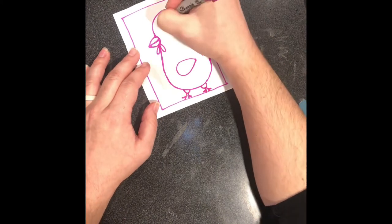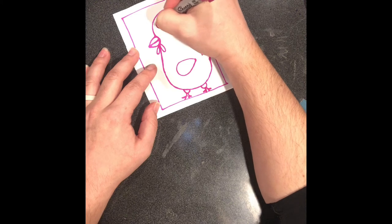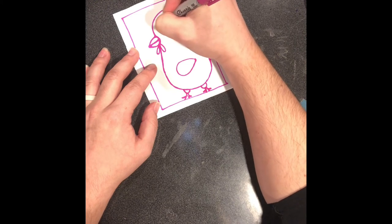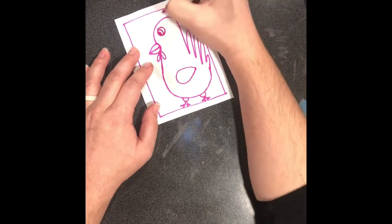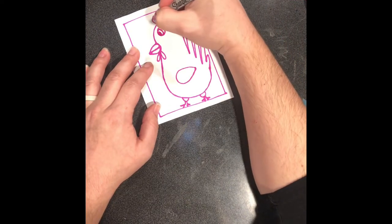Then I'm going to come up top here and add an eyeball. And you can design your eyeball however you'd like. So it could be like mine or it could be different. And then we're going to give our chicken his mohawk.